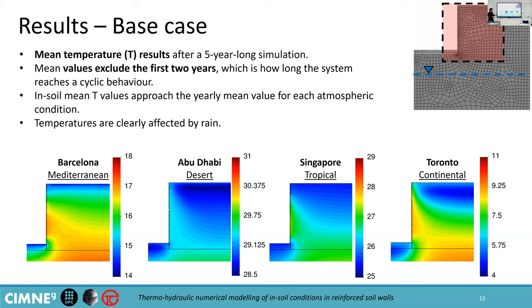What we found, in agreement with previous research, is that the mean soil temperature can be approximated to the mean average yearly temperature for each geographic location. That is approximately 17 to 16 degrees for Barcelona, around 29 to 30 degrees for Abu Dhabi, around 27 for Singapore, and approximately 8 degrees for Toronto.